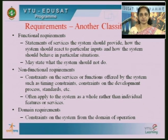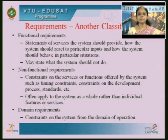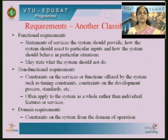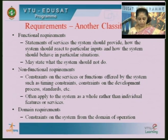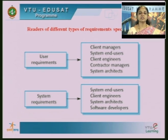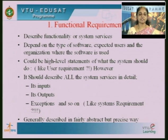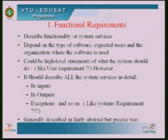Domain requirements specify the constraints on the system based on the domain in which it is going to operate. In the previous classification we had user requirements and system requirements. User requirements are generally written using natural language and are taken care of by the person involved in the requirements management process. Functional, non-functional, and domain requirements are a further classification.